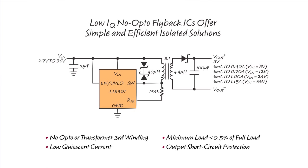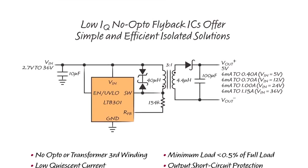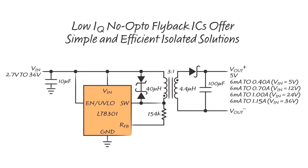To give you an example, here is a 5-volt isolated flyback converter from a 2.7-volt to 36-volt input using the LT8301, a recent part in our Low IQ No Opto Flyback family. Housed in a TSOT-23-5 package, the LT8301 requires only 7 external components, thereby providing a super-compact isolated power solution up to 6W.